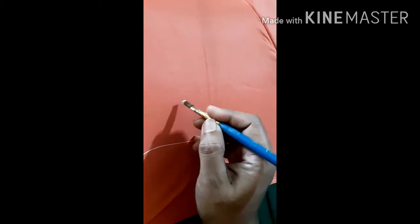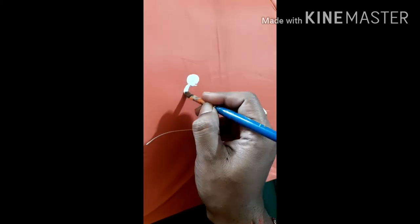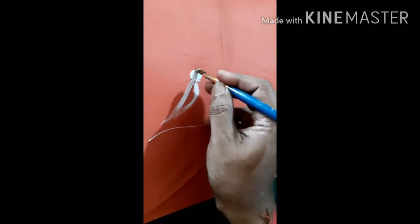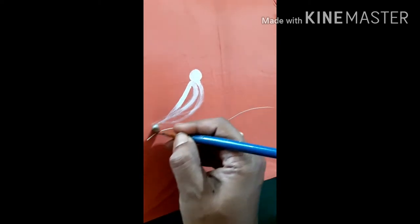I will start with a pencil. With the help of white color, I will draw branches using a flat brush, then I will paint the parrot.